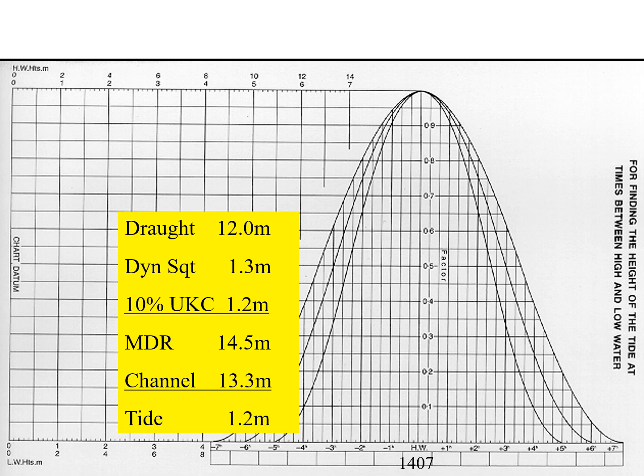Now we determine the safe time of transit using this graph. We assume some values here — in practice you find the low water and high water heights and times from the Admiralty Tide Tables for the port in question on the given date and month.